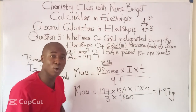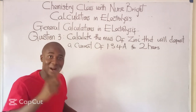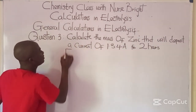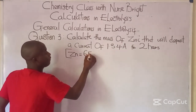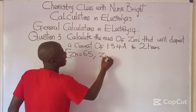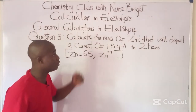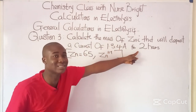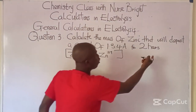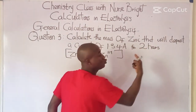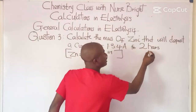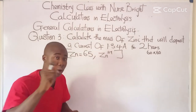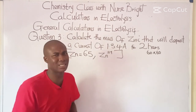Get ready for your own practice question and provide the answer in the comment section. Note: for zinc, the atomic mass is 65 and zinc exists as Zn²⁺. You must convert time to seconds — if time is given in hours, multiply by 60 × 60 (i.e., × 3600).